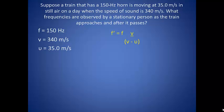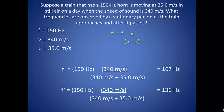We determine the frequency of the approaching train to be 167 Hz, which is indeed higher than the actual frequency of the horn. For the train moving away, the only difference is we are adding the speed of the train to the speed of the wave and we find 136 Hz.